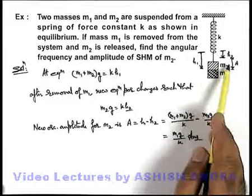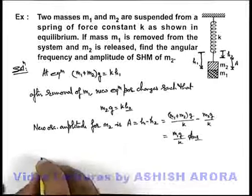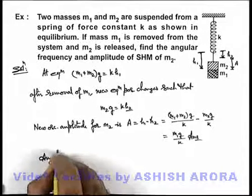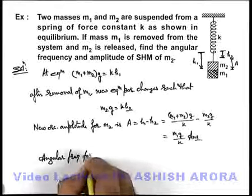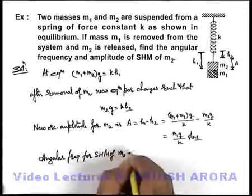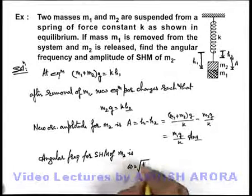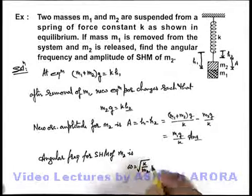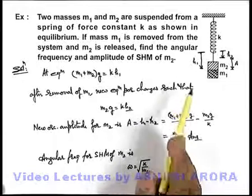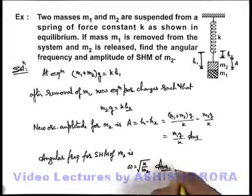Only m2 is oscillating under the influence of the spring having force constant k. The angular frequency of SHM of m2, as we already studied, can be given as ω = √(k/m2), because m2 is oscillating under the influence of a spring of force constant k. This is the answer.